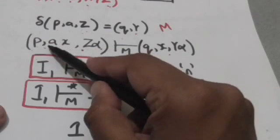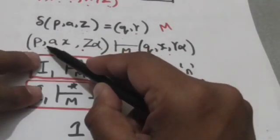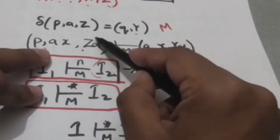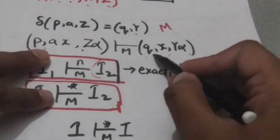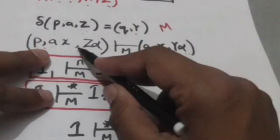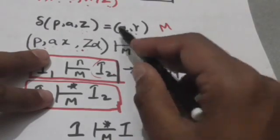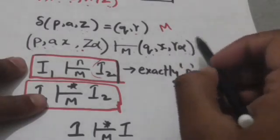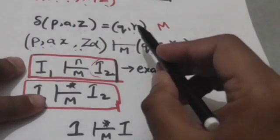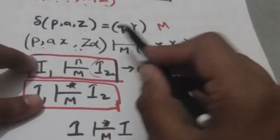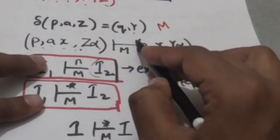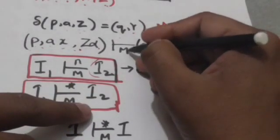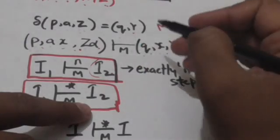In this configuration, the present state is P, the symbol to be read is A, and the stack symbol at the top is Z. After one move, the pushdown automata will reach the next configuration. These two instantaneous descriptions can be related by this symbol, because the pushdown automata reaches the second configuration from the first in exactly one move. Here M describes that we are talking about pushdown automata M; if it is obvious, this M can be removed.